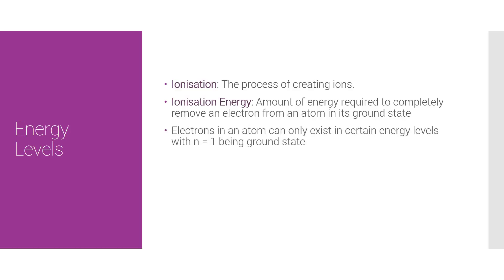Electrons in an atom can only exist in certain energy levels. N equals 1 is the ground state, however, some exam papers may put N equals 0, but N equals 1 is the standard. Electrons can in fact move up and down energy levels, but there are processes to it, and we'll go through them in just a minute.